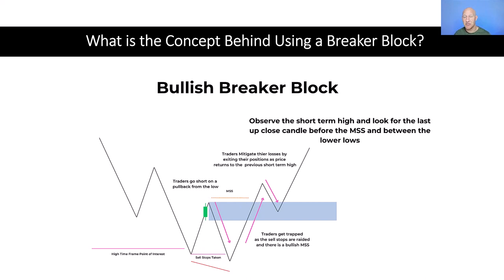So as traders are going short from the pullback from the low, as we take these sell stops and then the market reverses, taking out this short term high and creating our bullish market structure shift, the traders who initially went short now realise they're on the wrong side of the trade.